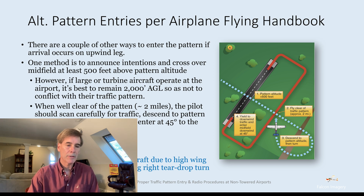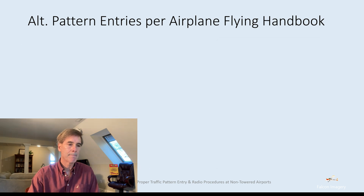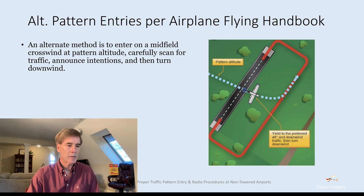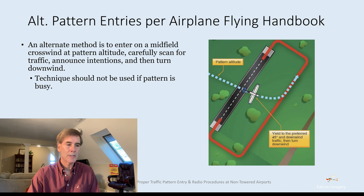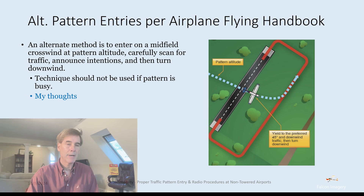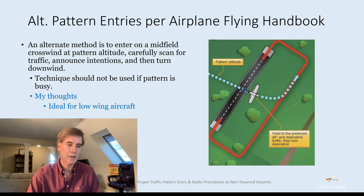This crossover entry is fine for a Cessna 172 or any high-wing aircraft. For low-wing aircraft, the better option is to cross midfield at pattern altitude, carefully scanning for traffic, announcing your intentions, and then turning downwind once you cross that midfield crosswind. This technique should not be used if the pattern is busy, but it is ideal for the low-wing aircraft.